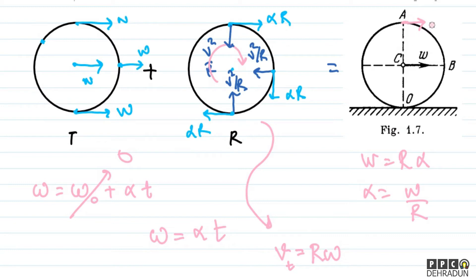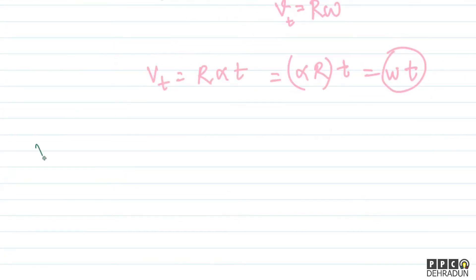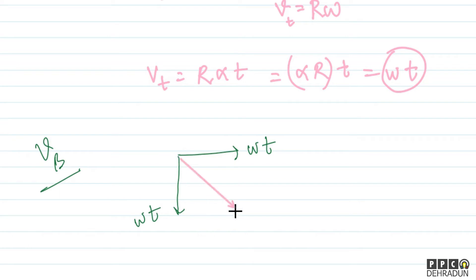For point B, we can write: one velocity is WT in the translation direction, and another velocity W into T is directed downward due to rotation. The resultant velocity lies along the angular bisector at 45 degrees, and the speed becomes root 2 into WT.